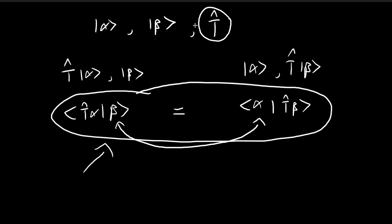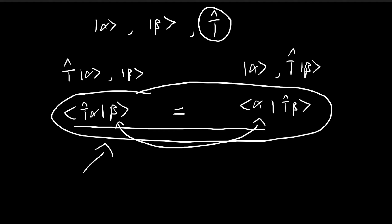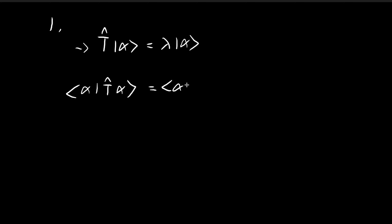For Hermitian transformations, there are two theorems you need to know. The first is that the eigenvalues associated with Hermitian transformations are always real. To prove this, let T be a Hermitian transformation, so for any two vectors it satisfies that inner product relationship. Let alpha be an eigenvector for this transformation, meaning T(alpha) equals some scalar lambda multiplied by alpha. Now consider the inner product between alpha and T(alpha). By the eigenvector relationship, T(alpha) can be expressed as lambda times alpha, and by inner product rules I can pull the lambda outside.